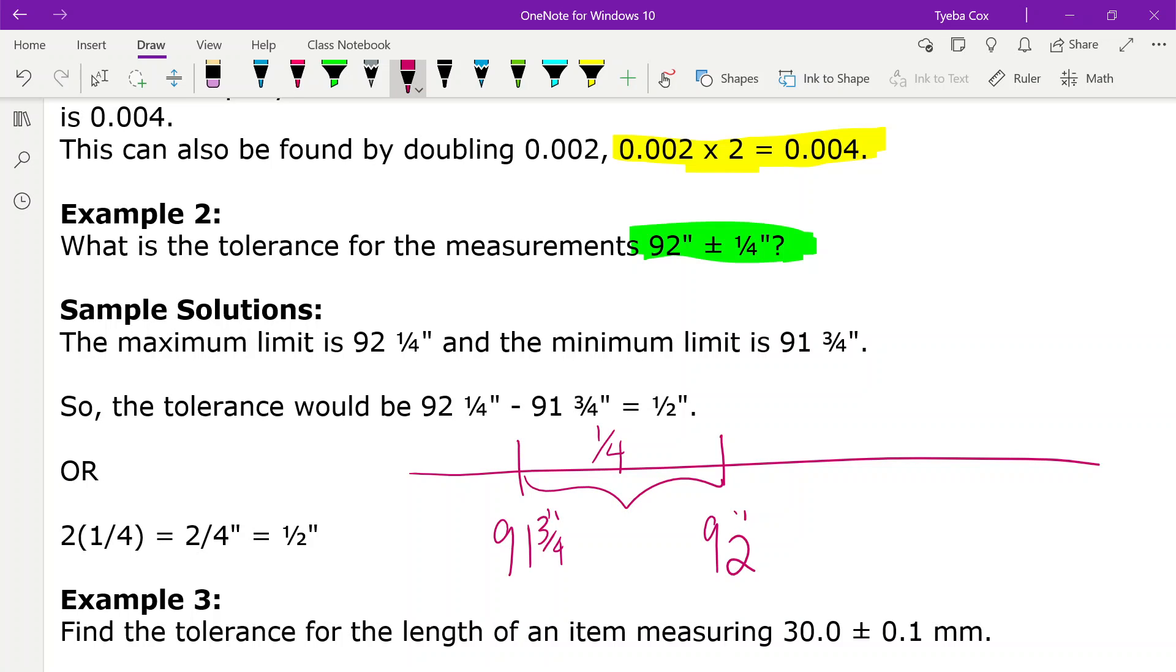And our maximum is going to be 92 and a quarter of an inch. All right, so how far away is it from there? So that's another quarter of an inch.